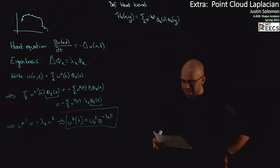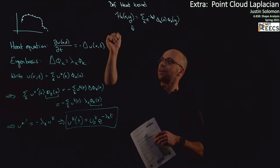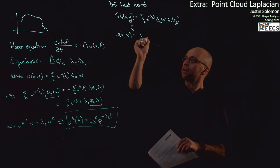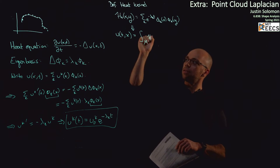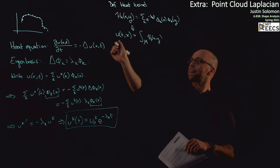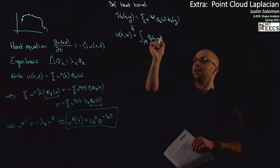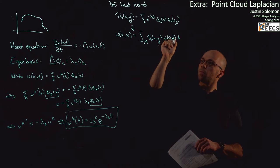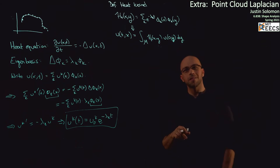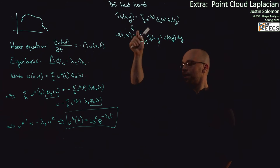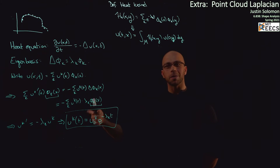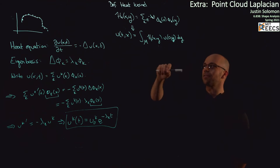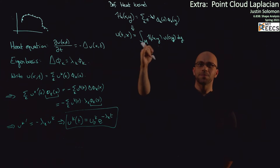The reason we like the heat kernel is that it allows us to do something cool: it gives us a nice closed-form for u that looks like convolution. Essentially, u looks like the integral over our manifold M of the heat kernel h_t(x, y) — integrating over y — times u(y, 0) dy. The basic point is that if we write the heat kernel in this way, we can convince ourselves quite easily that u as a function of time is just the integral of u-naught against the heat kernel, which is itself a function of time.